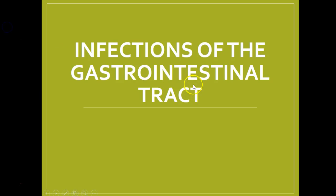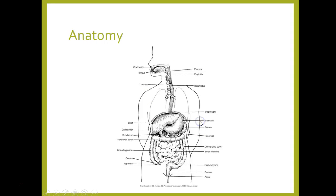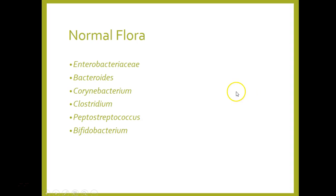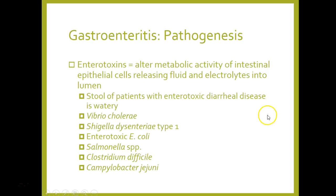Infections of the GI tract — here is the normal flora. Lots of Enterobacteriaceae exist as normal flora in the intestines. We also have tons of anaerobes: Bacteroides, Clostridium, Peptostreptococcus, and Bifidobacterium are all anaerobes found in the intestinal tract, along with Corynebacterium. There are lots of toxins at play causing different types of diarrhea, enterocolitis, and dysentery.